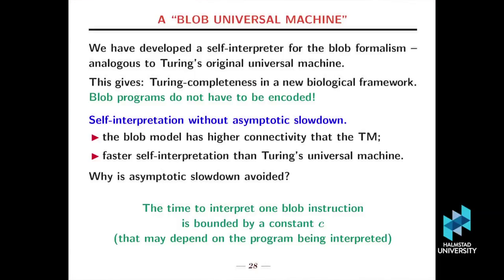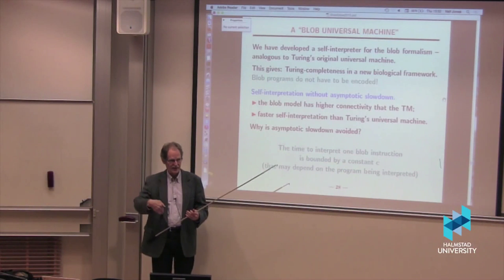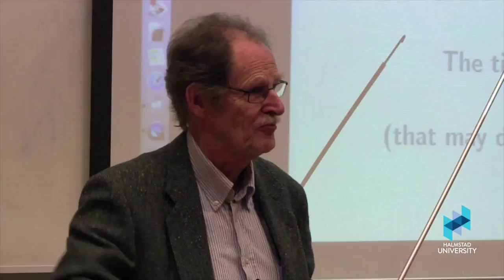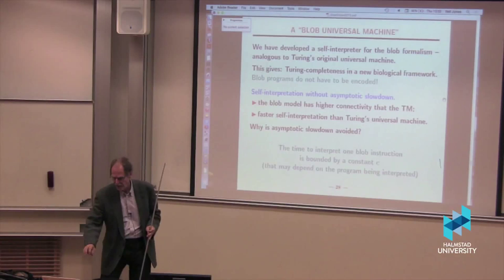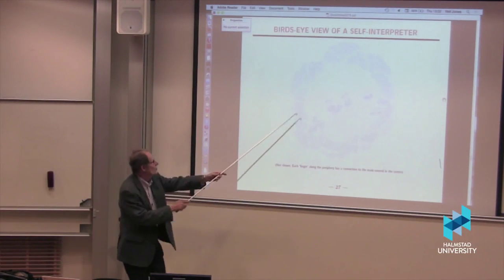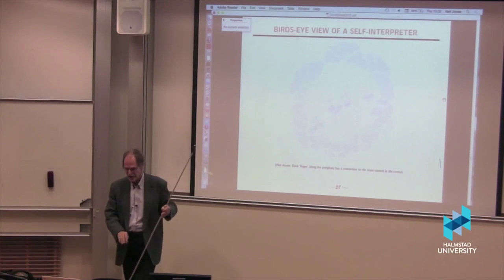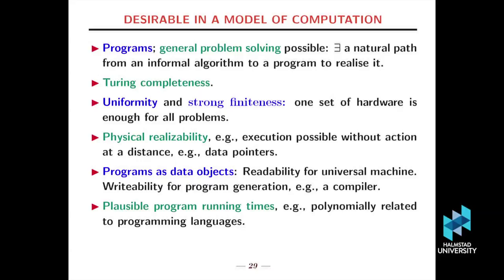And one point is that the blob programs don't have to be encoded. They just are these set of eight bits. So you don't have the painful things you have with say, Turing machine, universal machines. The self-interpreter doesn't have an asymptotic slowdown, as does the Turing machine. And geometrically, the problem is the blob model has a higher connectivity. There are more links between things than in the Turing machine, so you don't have the one-dimensional tape. And the other point is that the time to interpret one blob instruction is bounded by a constant. And what's the constant? Well, it's the width of this graph structure here. Okay. That's right.